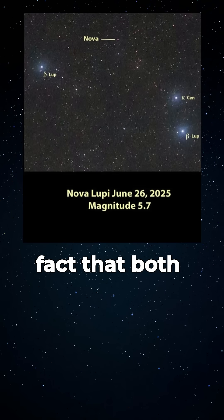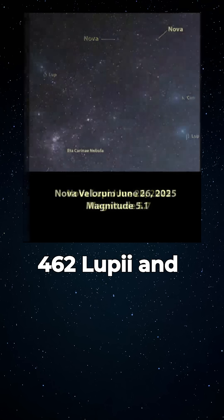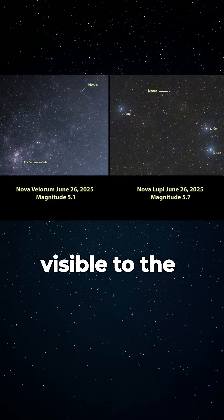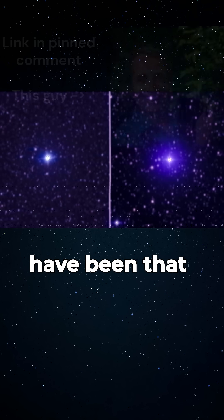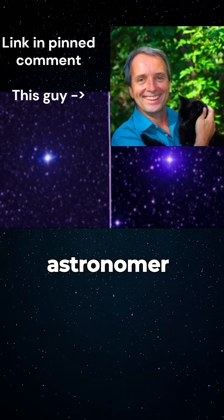What's really amazing is the fact that both V462 Lupi and V572 Velorum are visible to the naked eye at the same time, which is super rare. This could be the first time two recorded novae have been that bright at once, according to astronomer Stefan O'Mara.